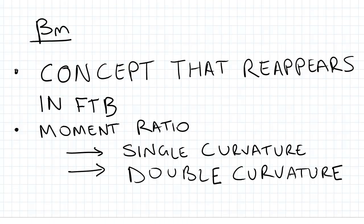So firstly, beta m - what is it? Basically, it's a moment ratio and it's a concept that will make more sense and reappear in flexural torsional buckling. The moment ratio is separated into single curvature and double curvature.